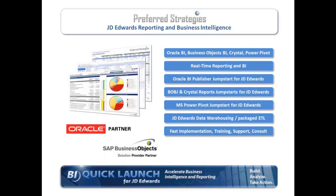That's probably why you're here — to figure out what BI Publisher delivers from Oracle and how to simplify an implementation of it. High-level, Preferred Strategies focuses primarily around business intelligence and reporting technologies specifically for JD Edwards. We haven't built our own technology — we've built content for JD Edwards using market-leading technologies like Business Objects, Crystal Reports, BI Publisher, which we're going to show you today, and things like Microsoft Power Pivot.